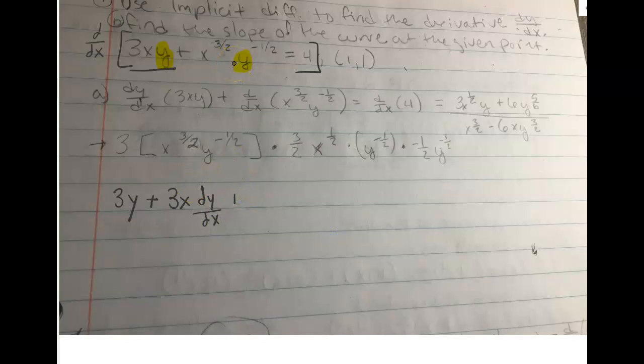The second term is a little more complicated because it's dealing with fraction exponents, but the same concept. Take the derivative of x to the 3 halves, so that's going to be plus 3 over 2x to the 1 half, hold the y function, y to the minus 1 half, plus hold the x function, x to the 3 over 2, times the derivative of the y function. In this case, minus 1 half y to the minus 3 over 2, times dy over dx.